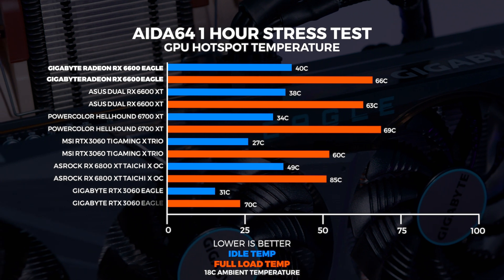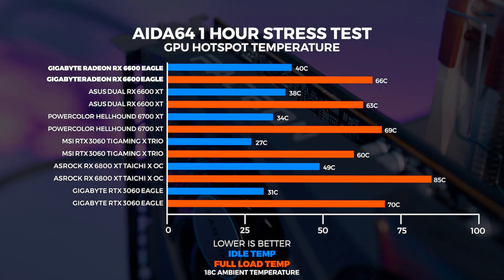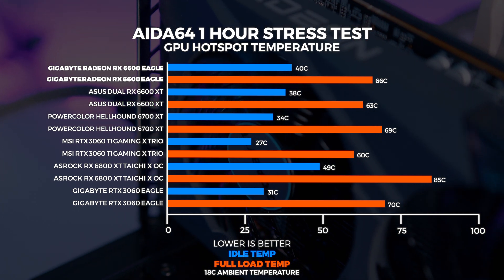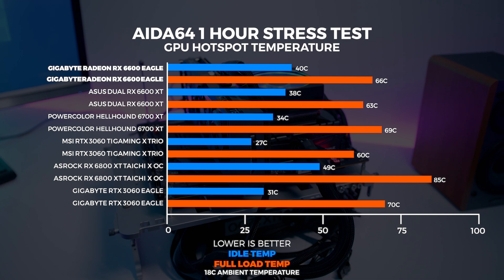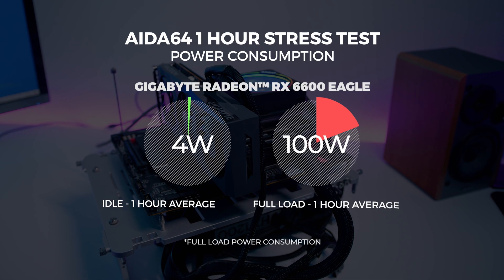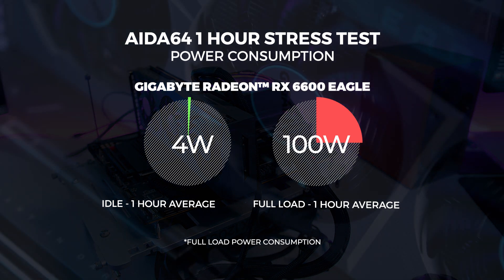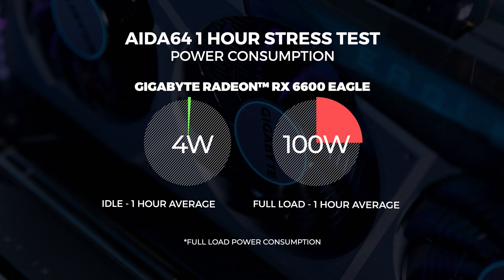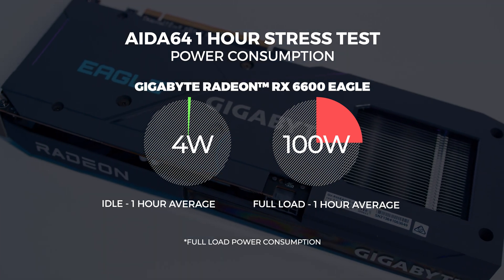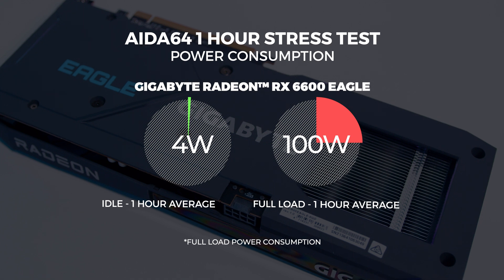We ran our one-hour stress test in Unigine and couldn't get the Gigabyte 6600 Eagle above 66 degrees with the hot spot temperature in our 18-degree climate-controlled office. Results in a closed system will differ from what we recorded here, but we include this data because the open air test system is consistent. At idle the card was only drawing around 4 watts of power — the same as the 6600 XT — showing the power efficiency of RDNA 2. At full load over one hour, board power maxed out at 100 watts. Given that this card is supposed to be 15% slower than the 6600 XT, it also consumes 15% less power.